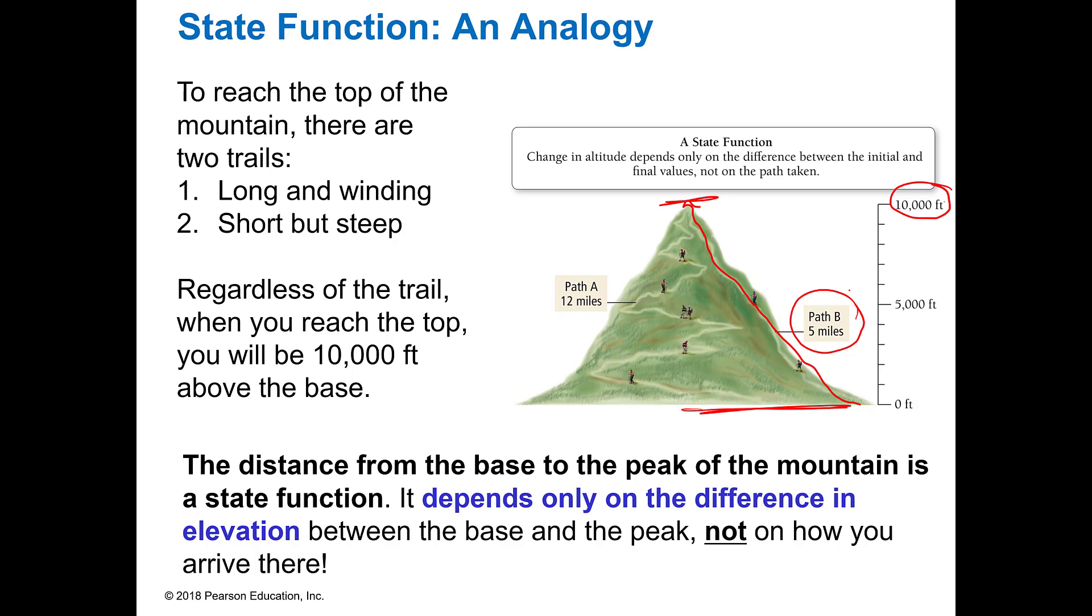But for most everybody else, the easier way to get to the top of a mountain is you're going to take a kind of a winding path, because you're taking a little bit easier path up there so you don't kill yourself. And so that path might take 12 miles. So these guys took five miles, and these guys took 12 miles to go from zero to 10,000 feet. But they both went the same difference in altitude. So in a state function, it doesn't matter how long it takes you. It just says you went from zero to 10,000. So 10,000 minus zero equals 10,000. That's a state function.